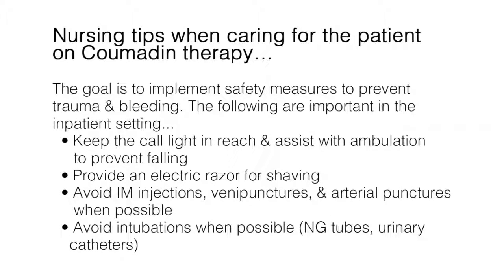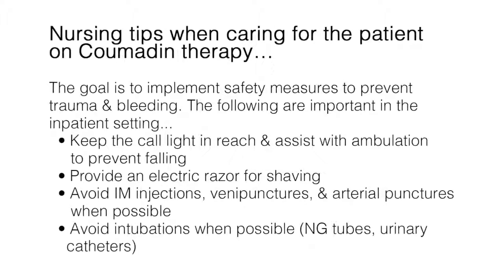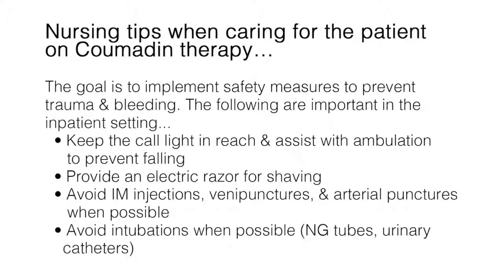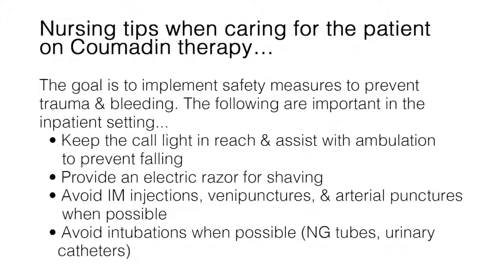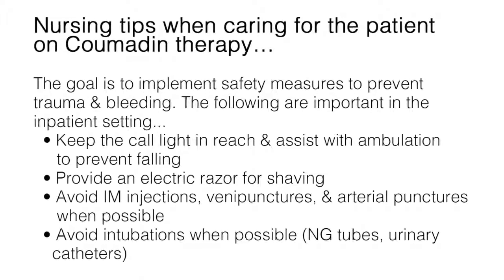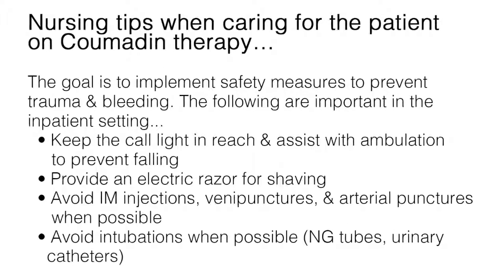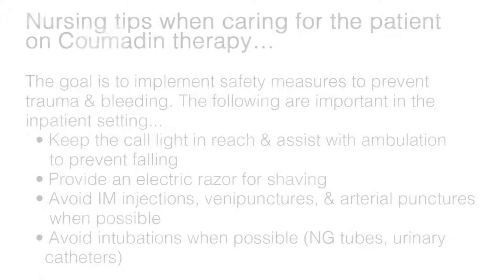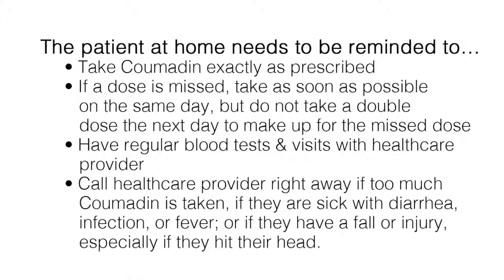Here are some nursing tips when caring for the patient on Coumadin therapy. The goal is to implement safety measures to prevent trauma and bleeding. In the inpatient setting: keep the call light in reach and assist with ambulation to prevent falling; provide an electric razor for shaving; avoid IM injections, venipunctures, and arterial punctures when possible; and avoid intubations when possible, such as NG tubes and urinary catheters. The patient at home needs to be reminded to take Coumadin exactly as prescribed. If a dose is missed, take as soon as possible on the same day, but do not take a double dose the next day. Have regular blood tests and visits with the health care provider, and call the health care provider right away if too much Coumadin is taken, if they are sick with diarrhea, infection, or fever, or if they have a fall or injury, especially if they hit their head.